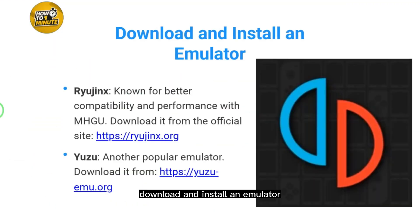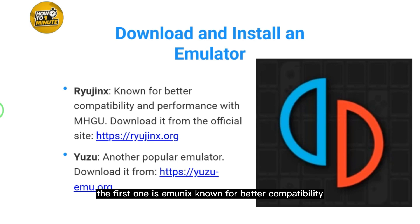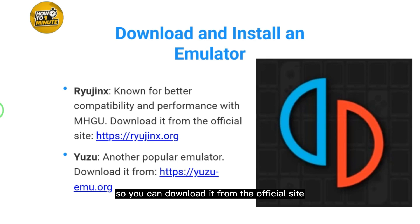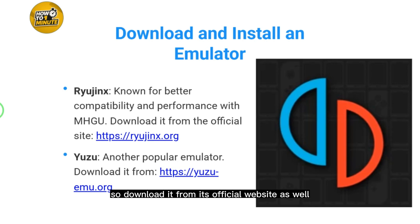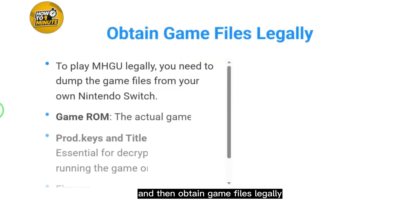Here are two emulators you can download. The first one is Ryujinx, known for better compatibility and performance with MHGU, so you can download it from the official site. The second one is Yuzu, another popular emulator — download it from its official website as well.